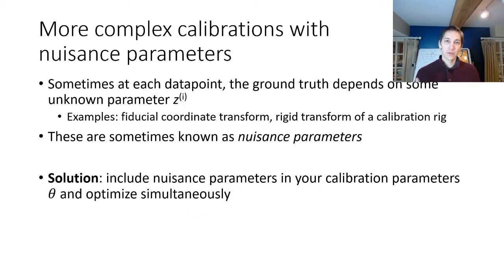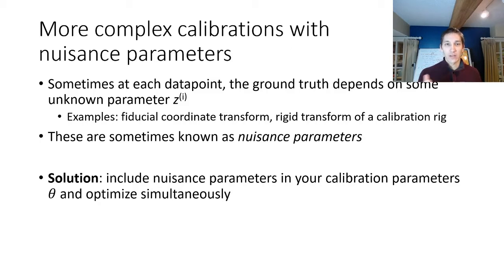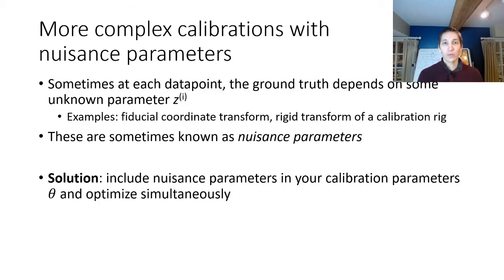One interesting aspect of calibration is dealing with nuisance parameters. Nuisance parameters means that at each data point, the ground truth actually depends on some unknown parameter that varies per data point. For example, the coordinate transform of a fiducial marker is unknown at each data point, or you may not have exact rigid transforms between cameras on a calibration rig. These nuisance parameters need to be optimized inside the whole minimization along with the parameters of interest θ — you optimize simultaneously the nuisance variables z as well as θ.